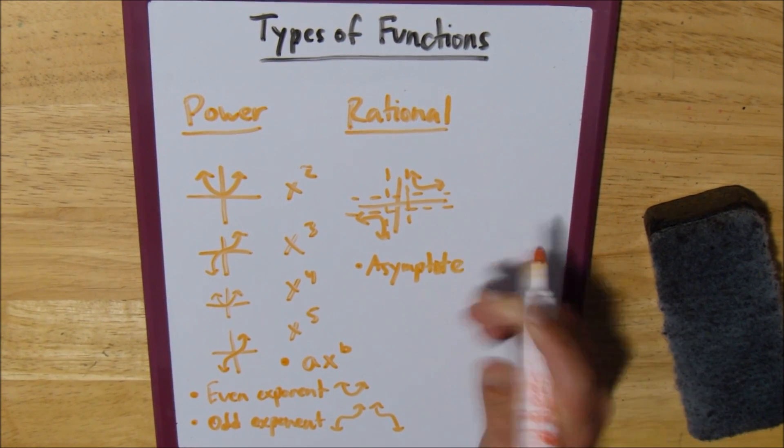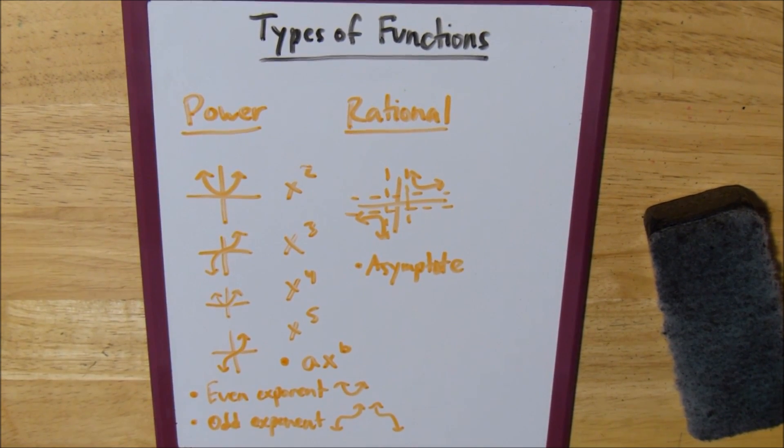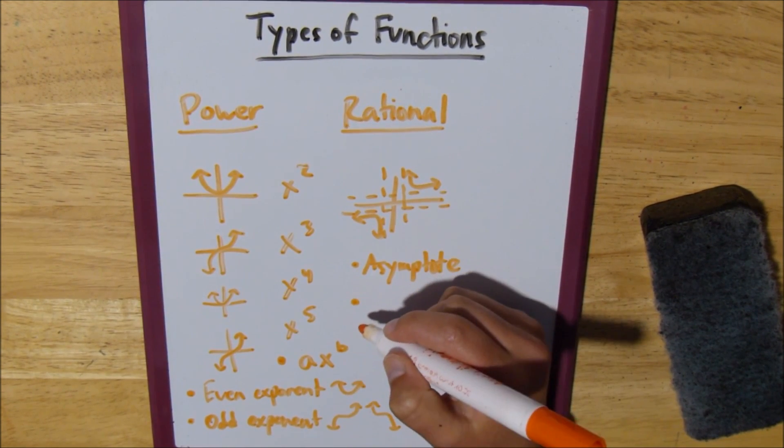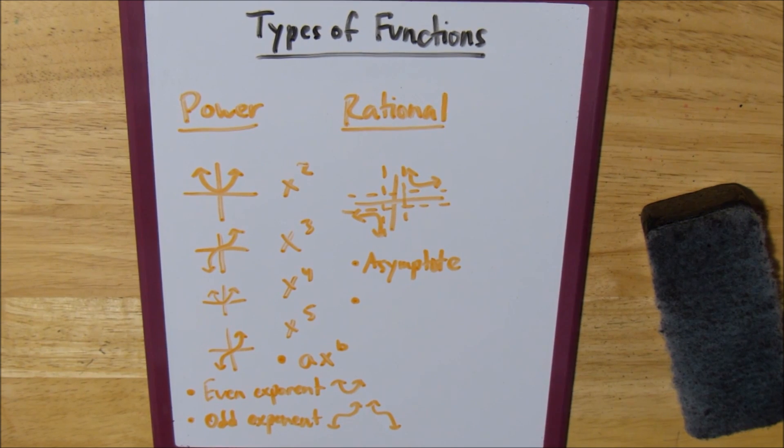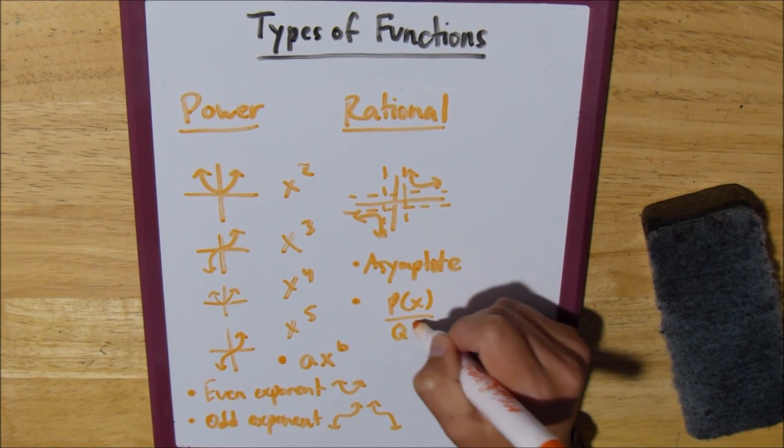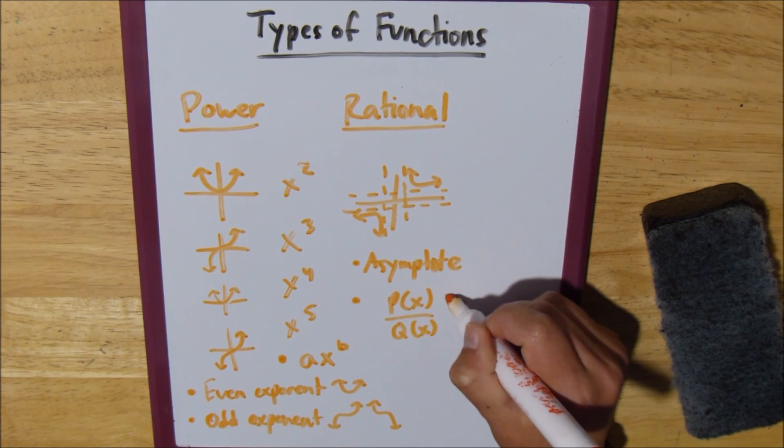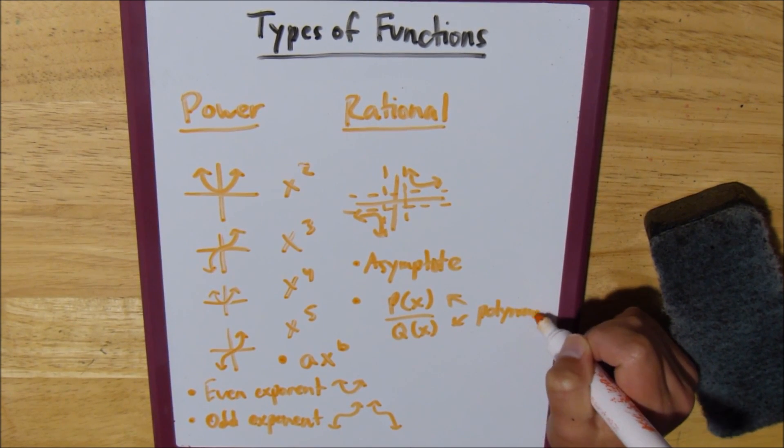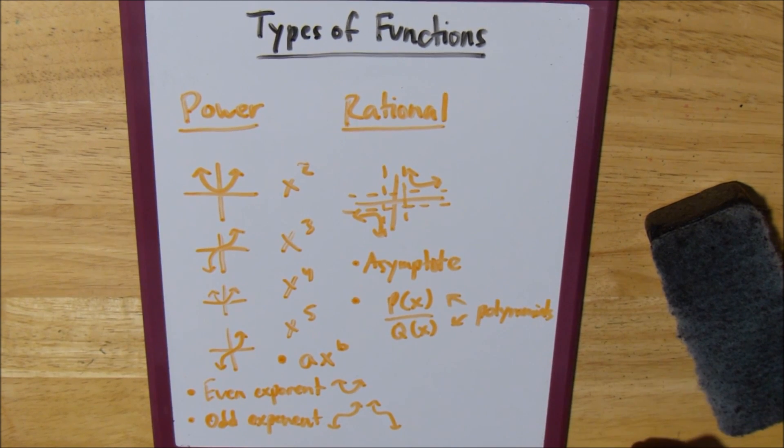Basically, an asymptote is where the graph can't go because of how the equation is set up. So the typical equation for a rational function is p of x over q of x, where both of these are polynomials.